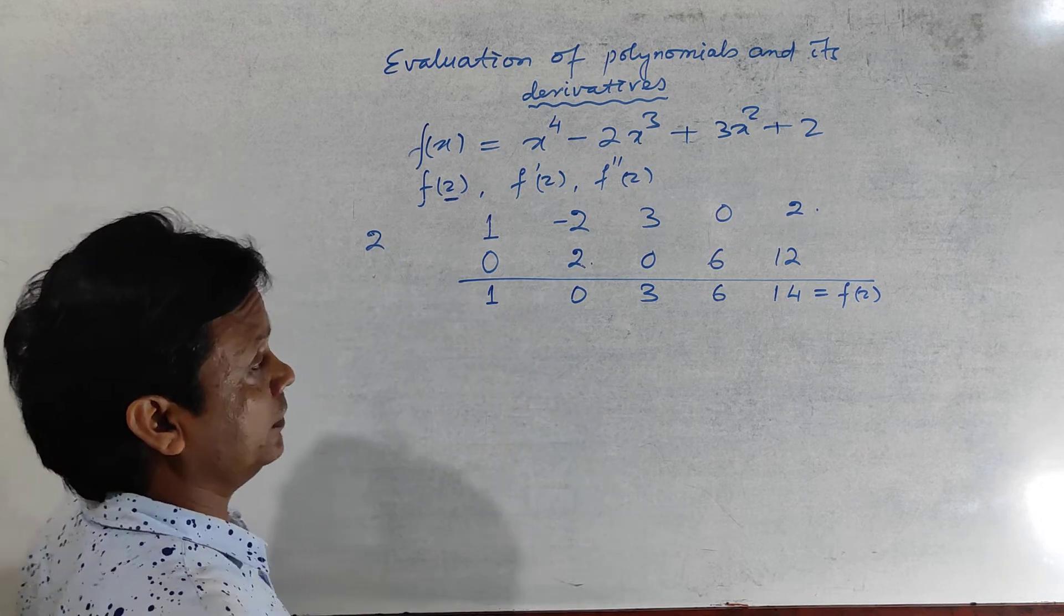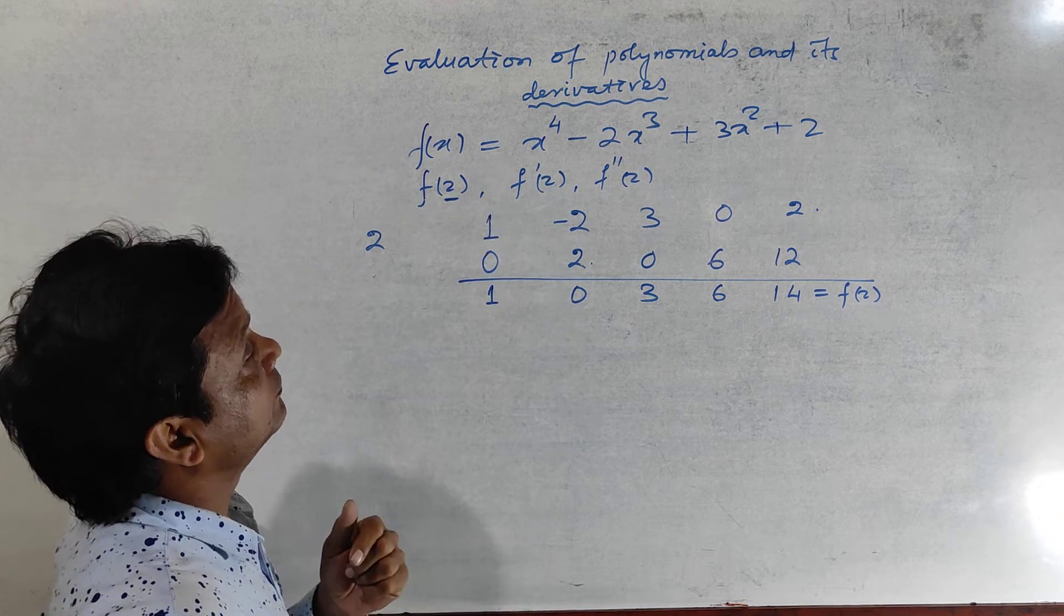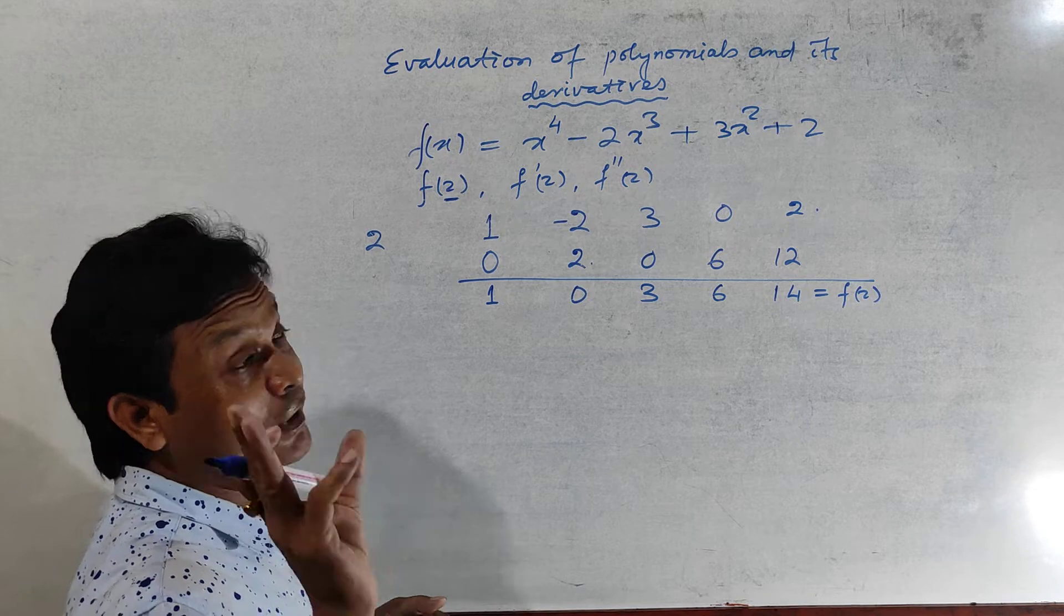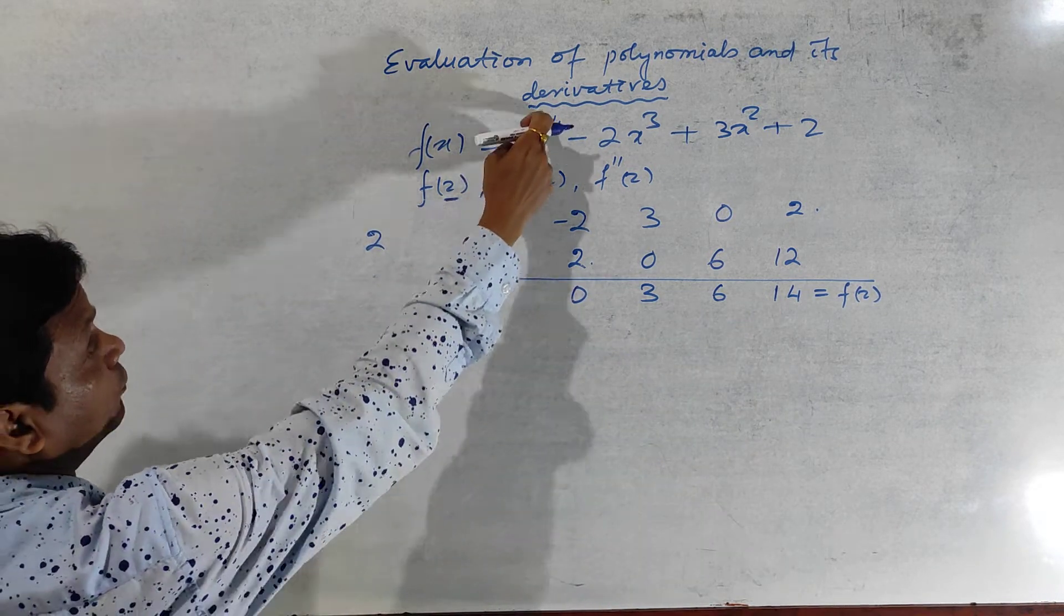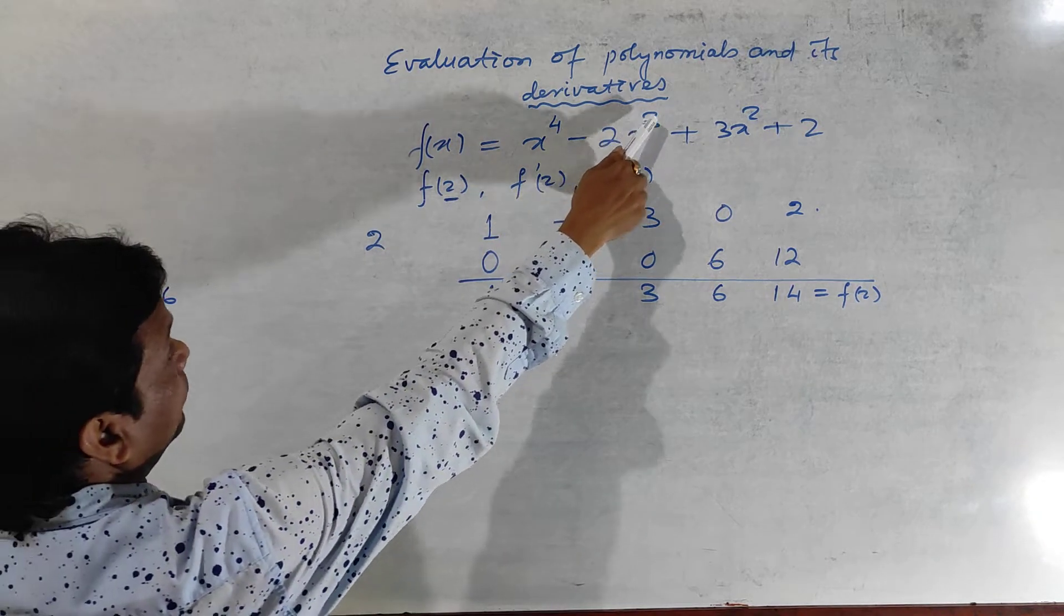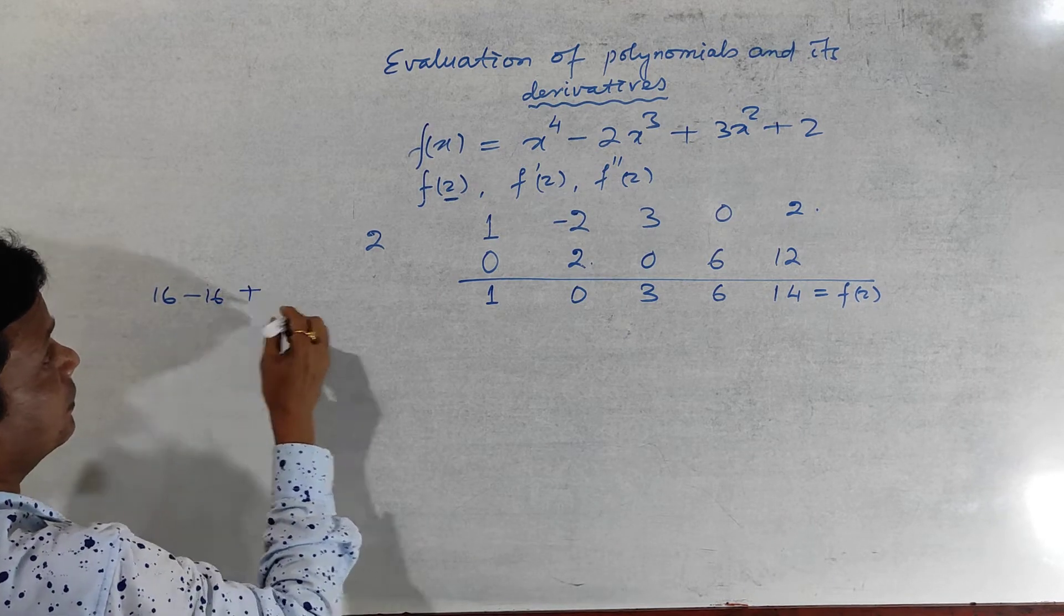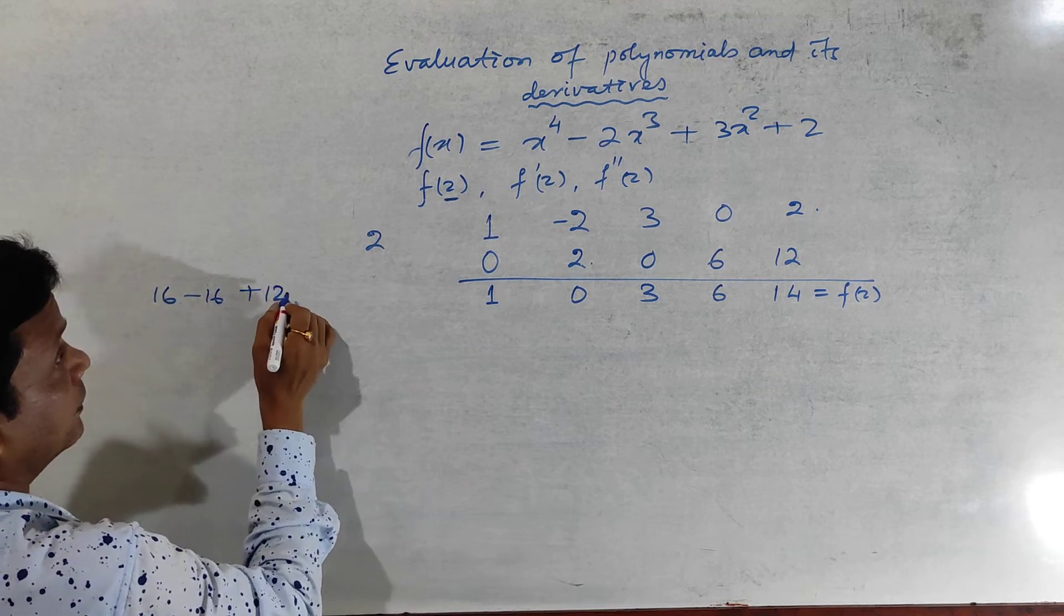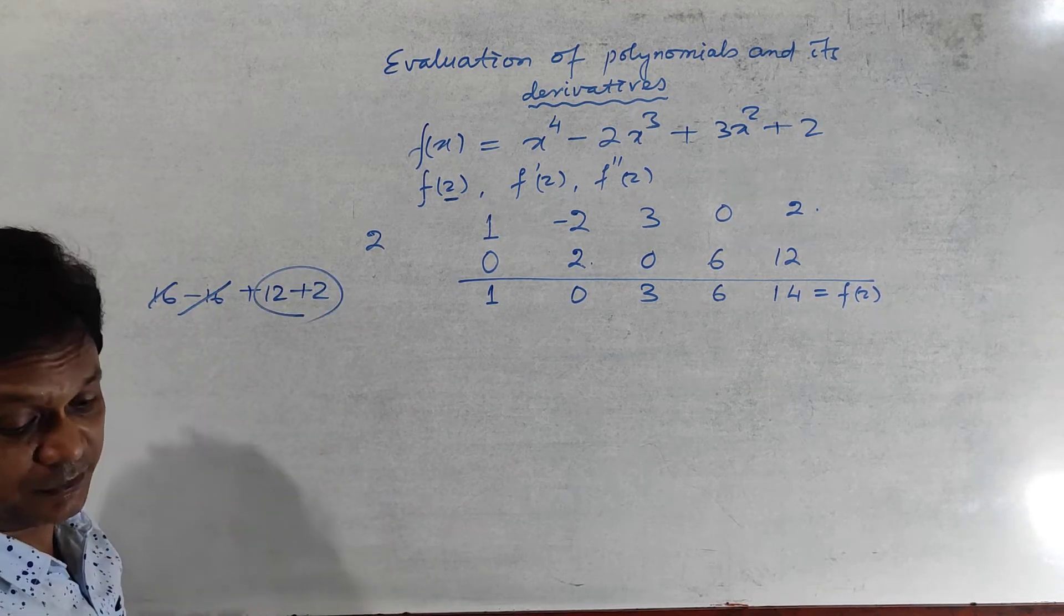You can check it also. See here, then you want to find out f of 2, or you are thinking that the answer may be wrong or correct. See, let us try. 2 to the 4, 2 to the 4 is 16, then 2 to the 3 is 8, 8 into 2 is 16, then plus 2 square is 4, 4 into 3 is 12, plus 2. These two cancel out, so remain 14, clear.